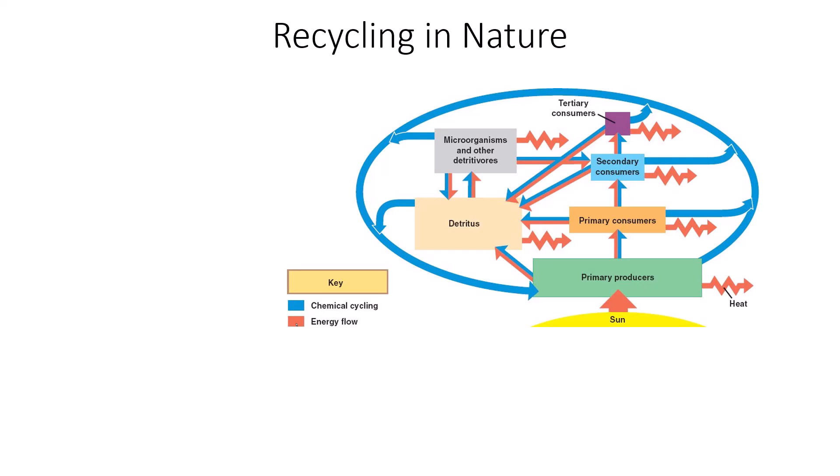The first thing we need to talk about is how energy flow is different than chemical cycling. This image is not any one particular matter cycle, rather it's a generic version of the whole chemical cycling and energy flow. Energy is denoted by these red arrows and the chemical cycling or nutrient cycling is denoted by the blue arrows.